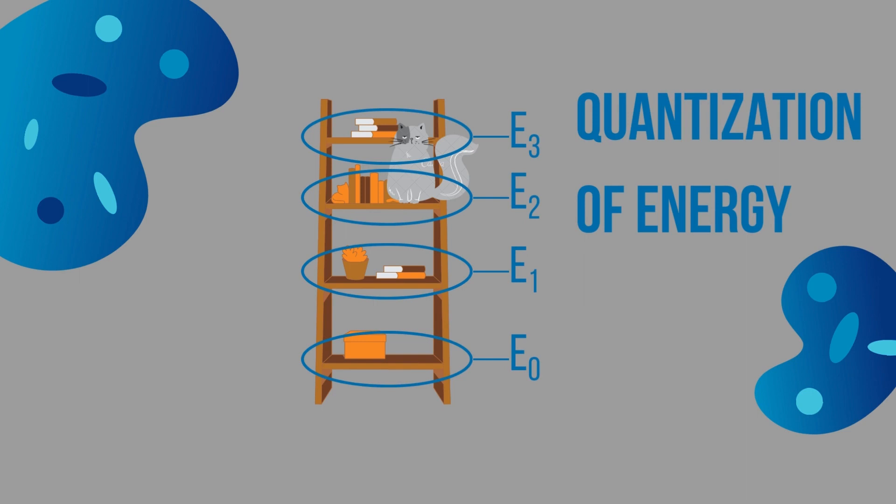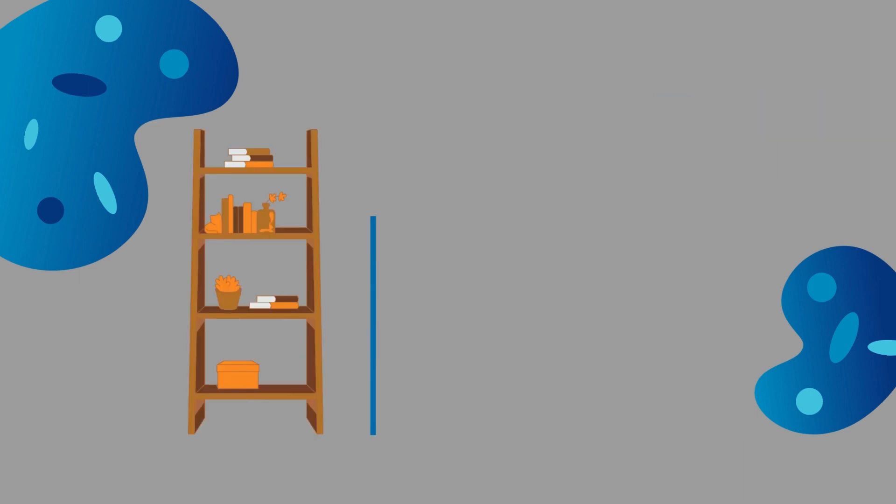So how does it work in quantum dots? Well, in the context of the shelf, its height can be thought of as the energy requirement, whereas in the quantum dot, its size creates the energy requirement. Let's see why.